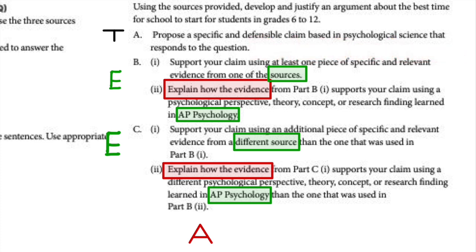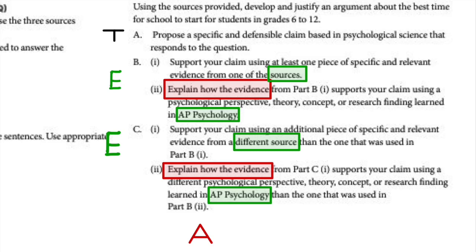Be specific — don't just say 'later in the day' or 'earlier in the day.' Give a specific claim. For Part B, you'll use evidence from the source and evidence from content. Then Part C, evidence from the source and evidence from the content. Support your claim using at least one piece of specific and relevant evidence from one of the sources — don't be vague and just say 'source A supports my claim.' What results from source A support your claim? Put the citation in parentheses at the end, or say 'according to source A' at the beginning.